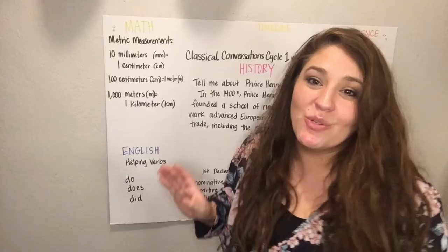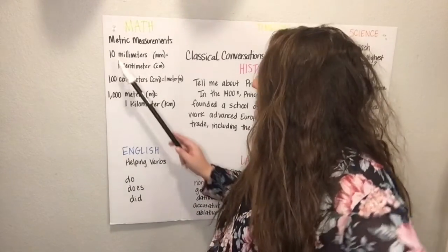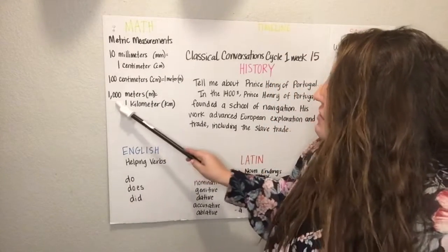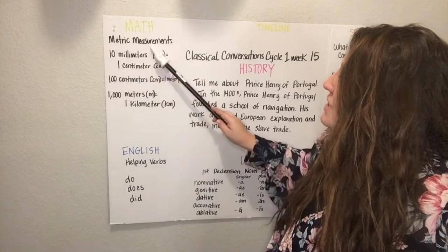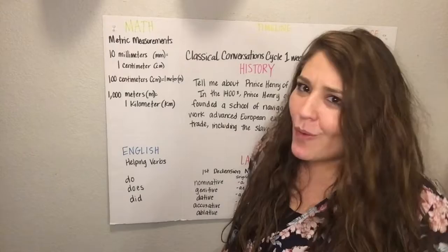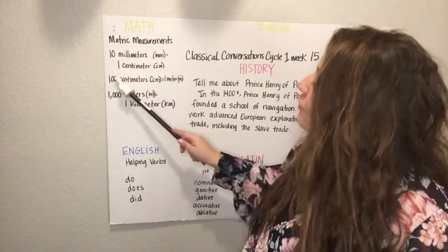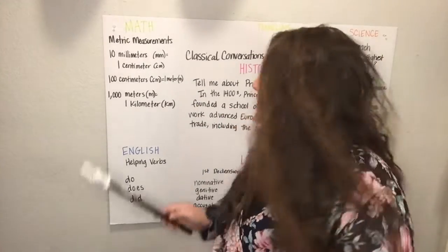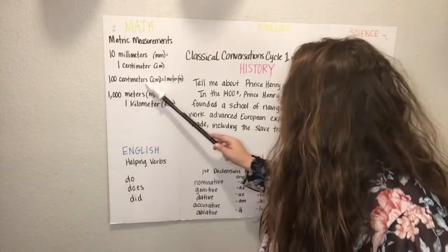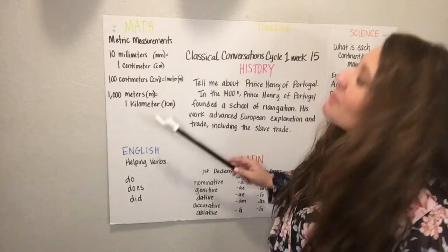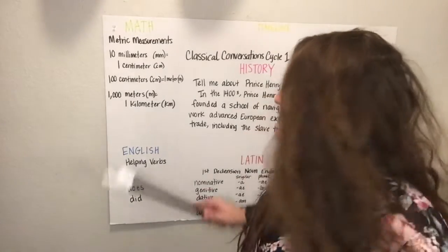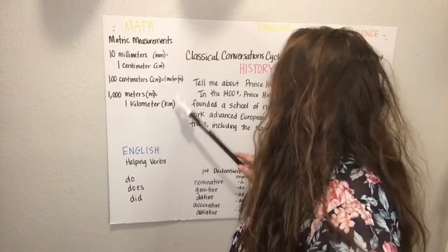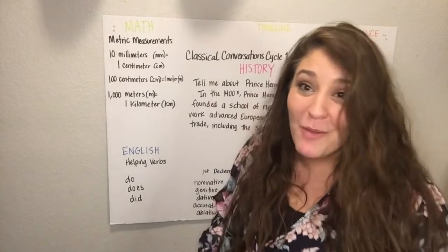We sang this to '10 Little Indians,' so let's try it out. 10 millimeters equals 1 centimeter, 100 centimeters equals 1 meter, 1,000 meters equals 1 kilometer — metric measurements! And then at the end we went quack, quack. We tried it again with honk, honk, and then with roof, roof, meow, meow. You get the idea.